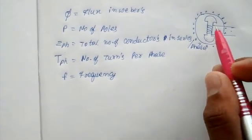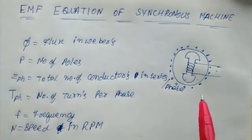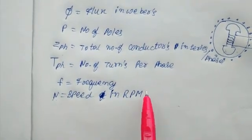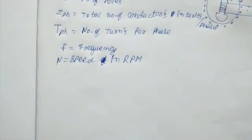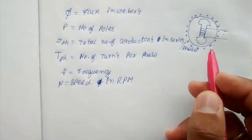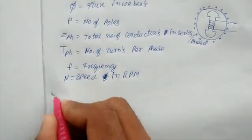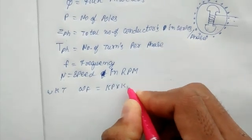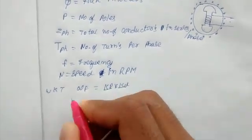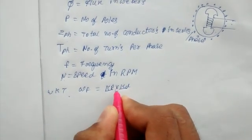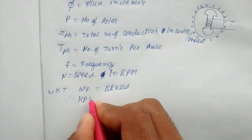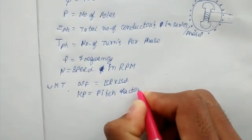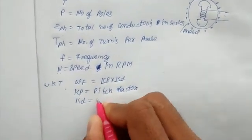We will consider the flux from the alternator. Next, we have the speed of the rotor, denoted as n. So, n is equal to speed of rotor in RPM. Next, we have winding factors. The winding factor is equal to Kp into Kd — nothing but pitch factor into distribution factor.